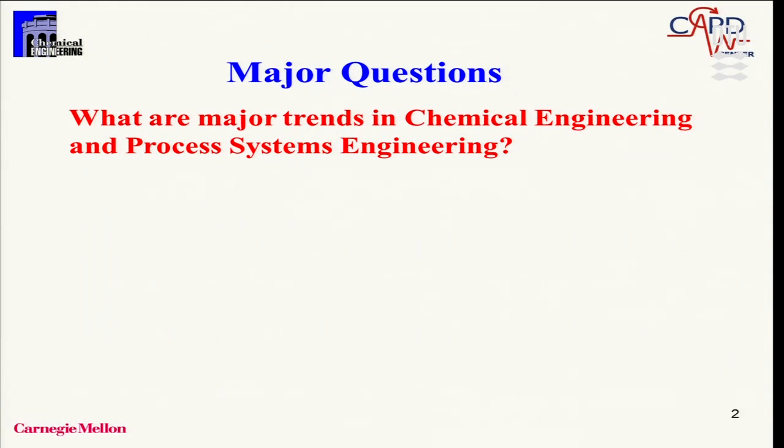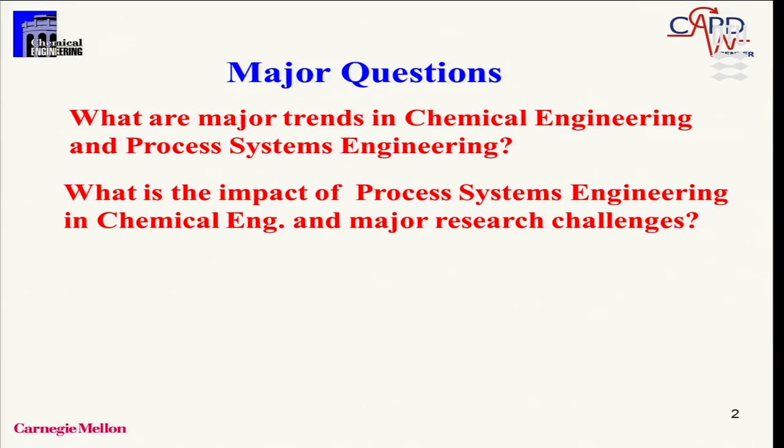The major questions I'd like to address are the following. First, what are some of the major recent trends in chemical engineering, and how have they related to process engineering? Second, what's been the impact of process engineering and how it relates to chemical engineering? And also, what are the intellectual research challenges in this area, which often may not be fully appreciated.